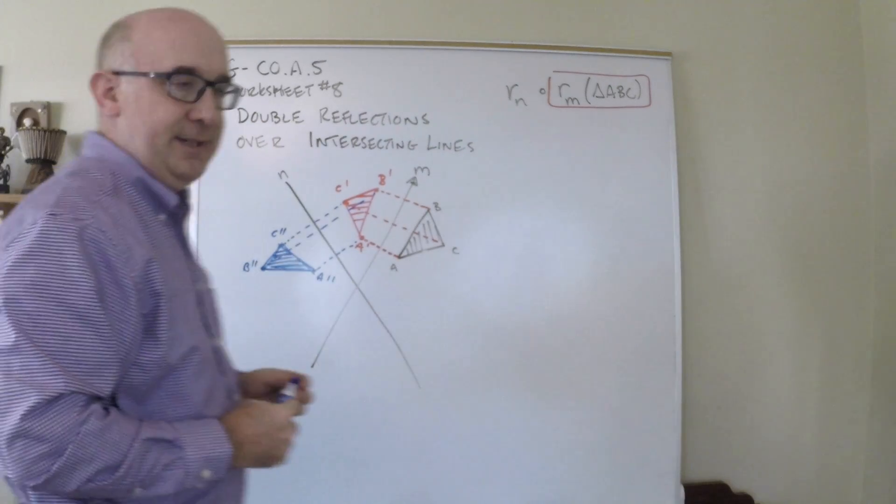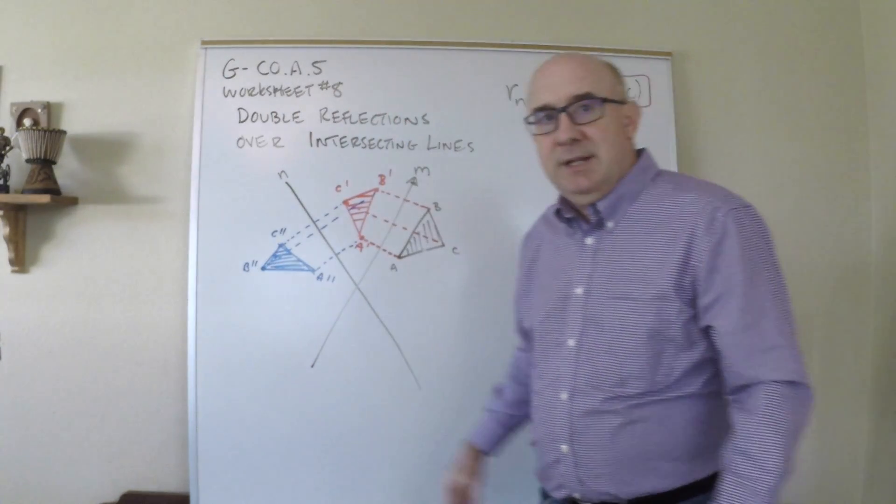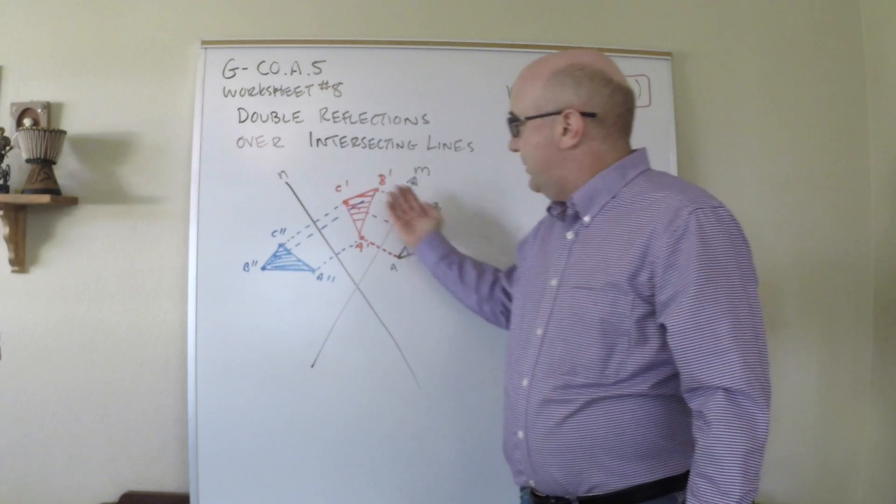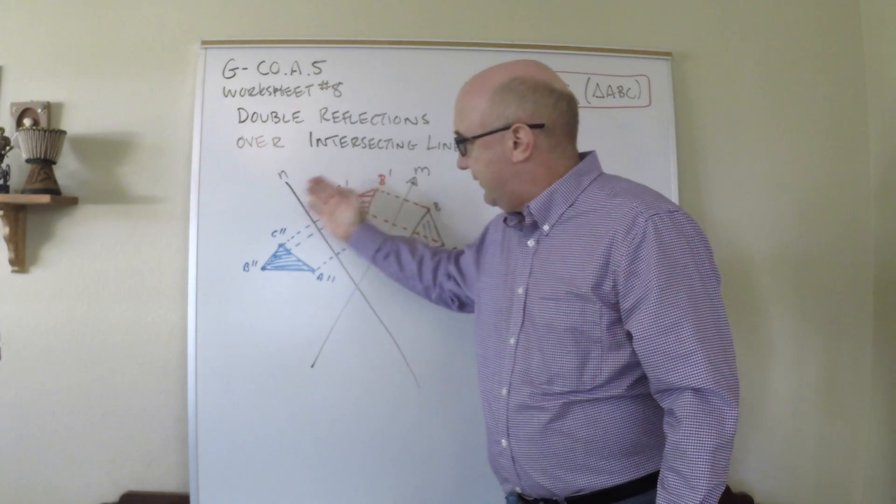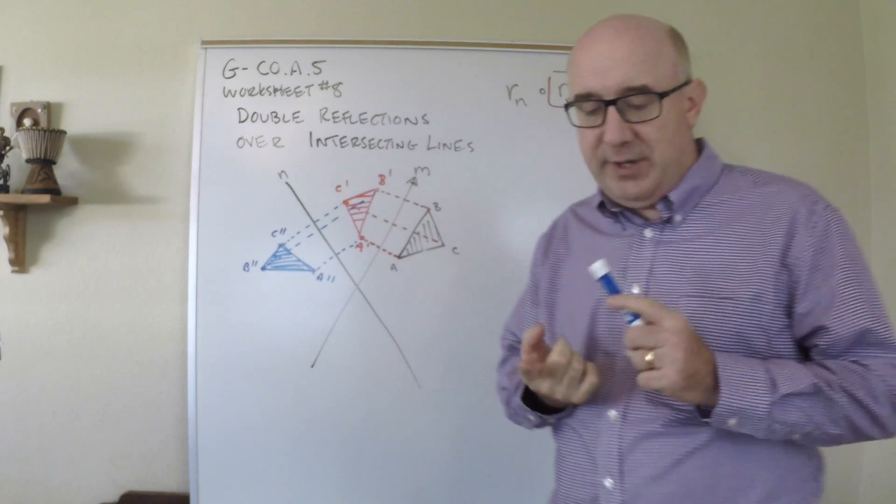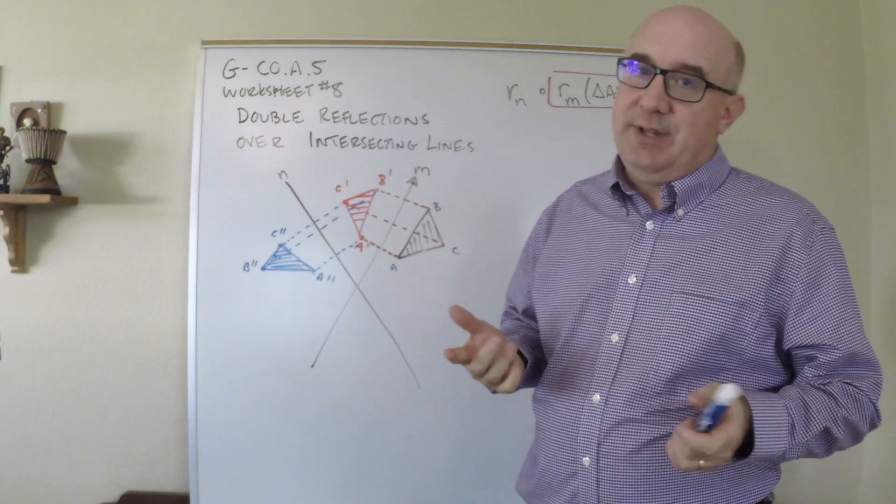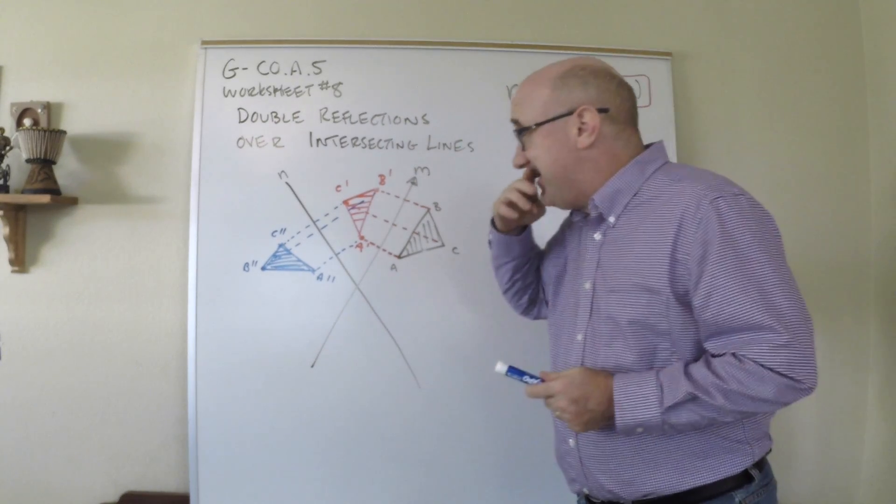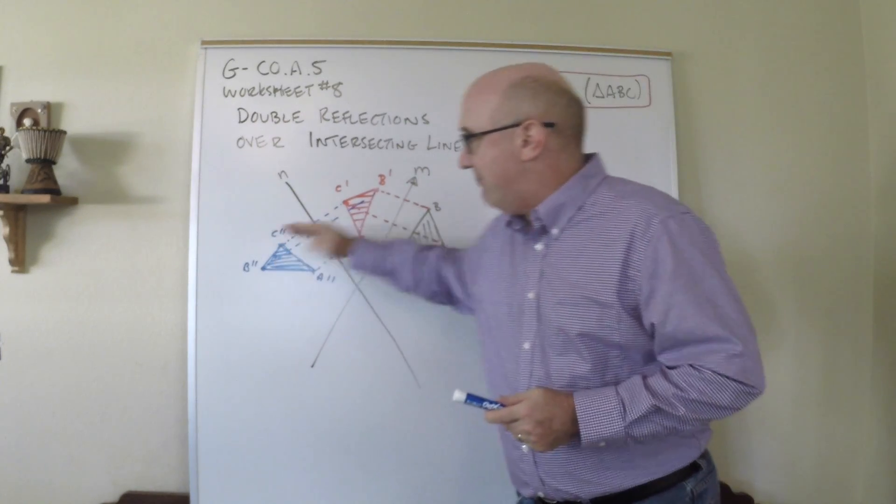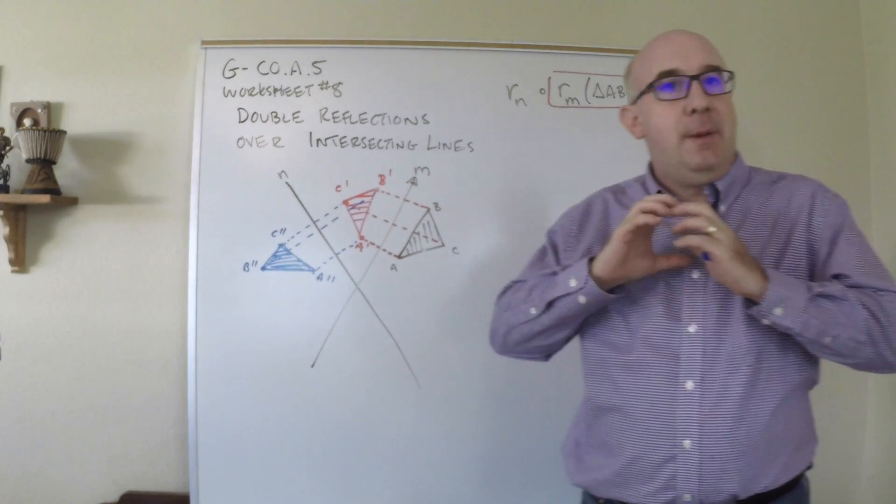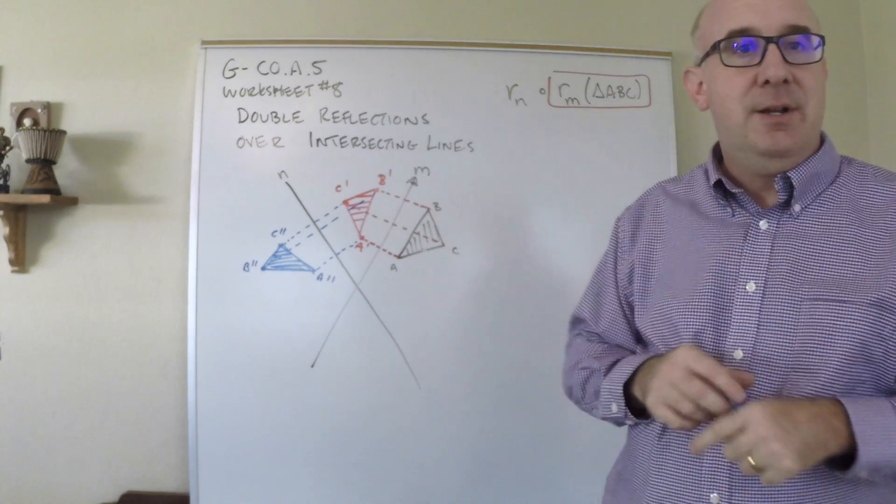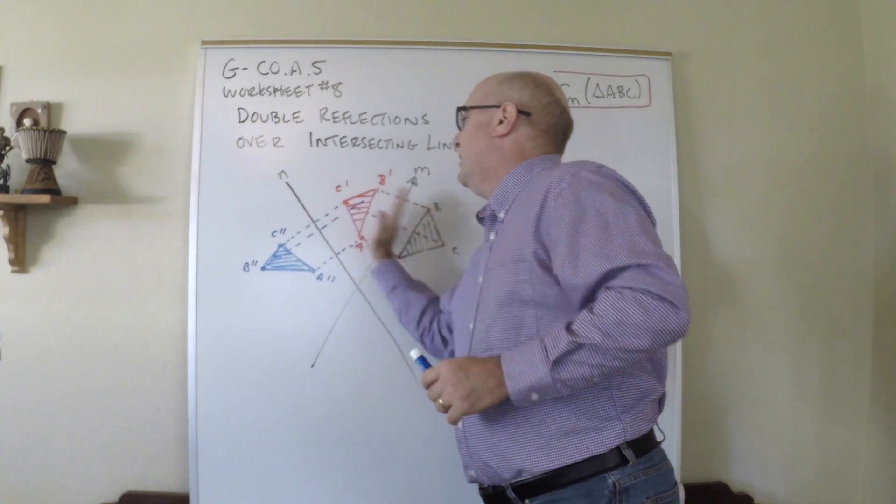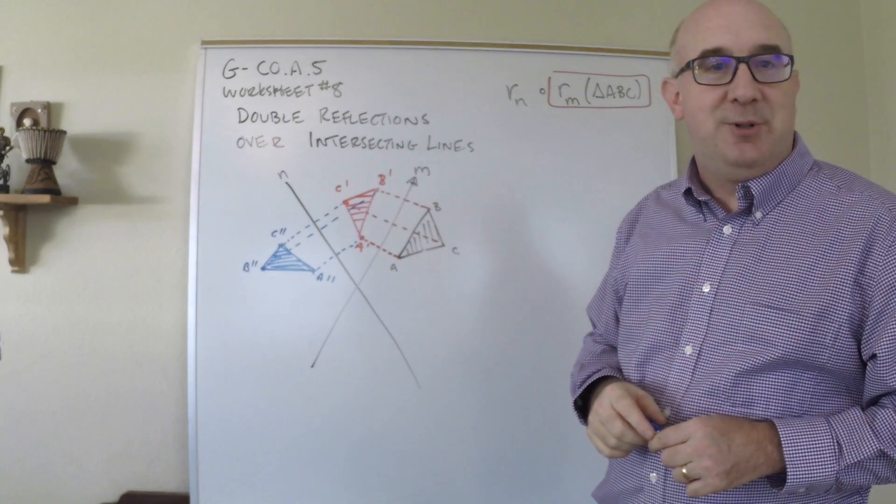Now again I'm just kind of roughing this in for sake of time and working on a board. Let's take a look at the original though, and then its image. The first one reflected it, reversed the orientation. It reflected again, reversed the orientation back. So first of all we know that the orientation is the same. So this has to be either a translation or a rotation. Now it's not a translation because you'll notice everybody is not moving in the same parallel direction. So that's out. So what do we have? We have a rotation.